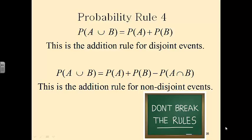If we're doing a union where it can be in either A or B but they are non-disjoint — events that can happen at the same time — then we have to use the addition rule for non-disjoint events.